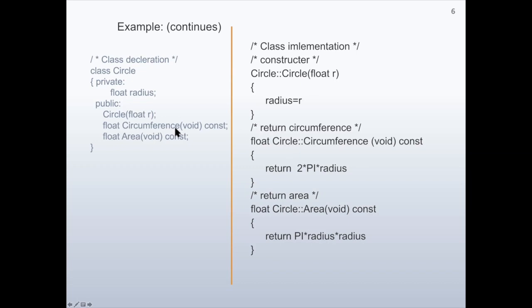The second method is circumference. Notice that this line is the same as the method declared in the class declaration. The only difference is that here we mention the name of the class — so the circumference method belongs to class circle. It returns a floating value. It returns 2 times pi times radius, which is calculated and returned as the return value of the method circumference.